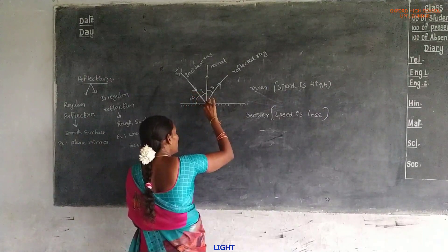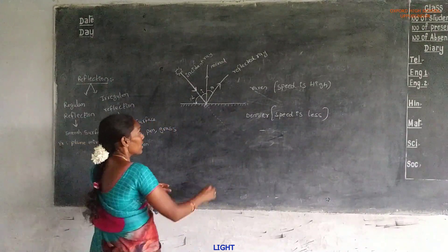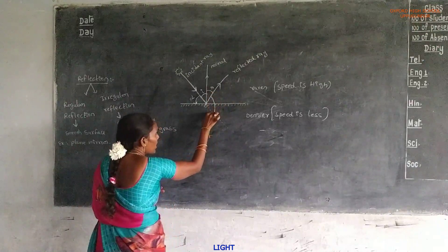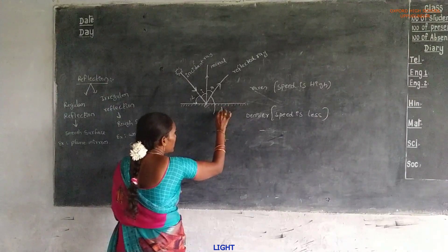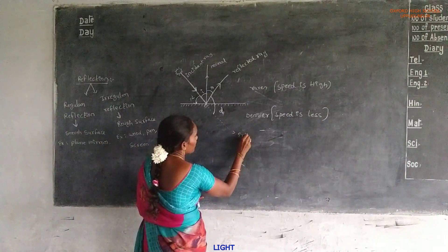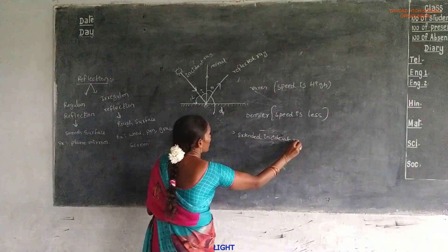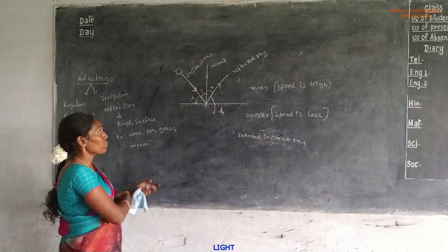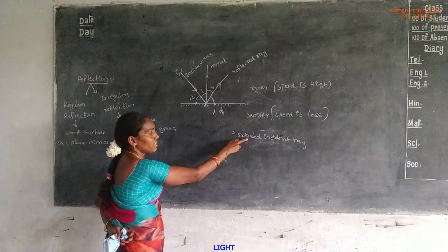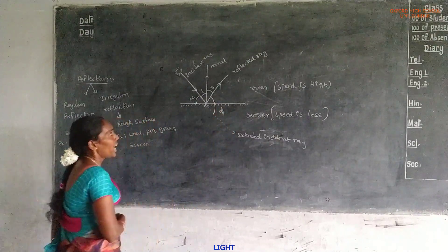If the incident ray is extended into another medium — that is the denser medium — the angle between the reflected ray and the extended incident ray is called the angle of deviation. It is represented by the small letter d.